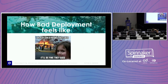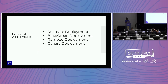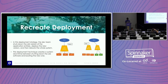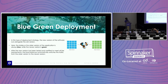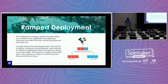Bad deployments are unavoidable, but we can definitely reduce the damage. Here are the deployment strategies available in the market. The first one is recreate deployment — the simplest one — where we just delete all the available servers and launch the new version. So we have downtime in recreate deployment. Then we have blue-green deployment, where we create an entirely identical stack and gradually shift the traffic to the new version. Third, we have the rolling deployment, where we gradually shift traffic server by server rather than creating an identical stack.